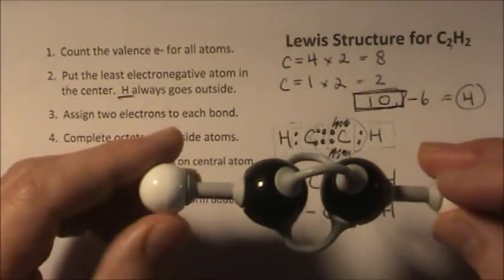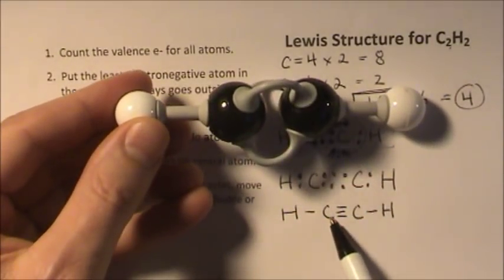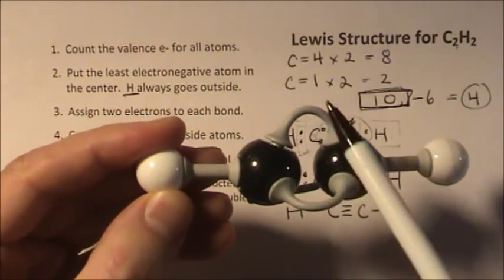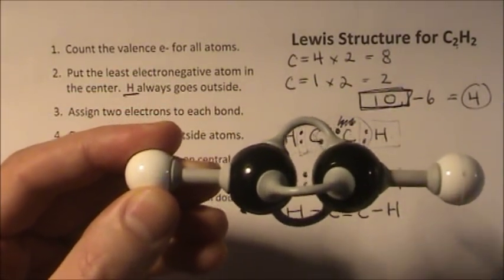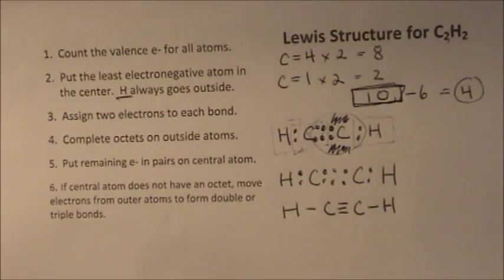And if you come back to our structure, now you can see these are the single bonds right here. And this triple bond, one, two, three, in the center, holds the two carbons together, bonds those together. That's the Lewis structure for C2H2 ethyne.